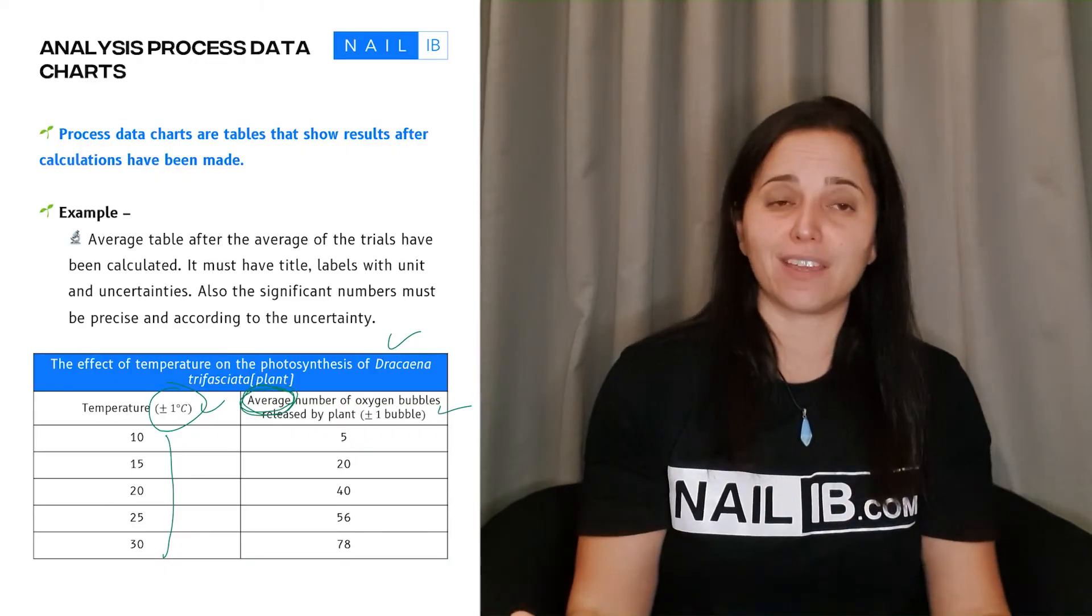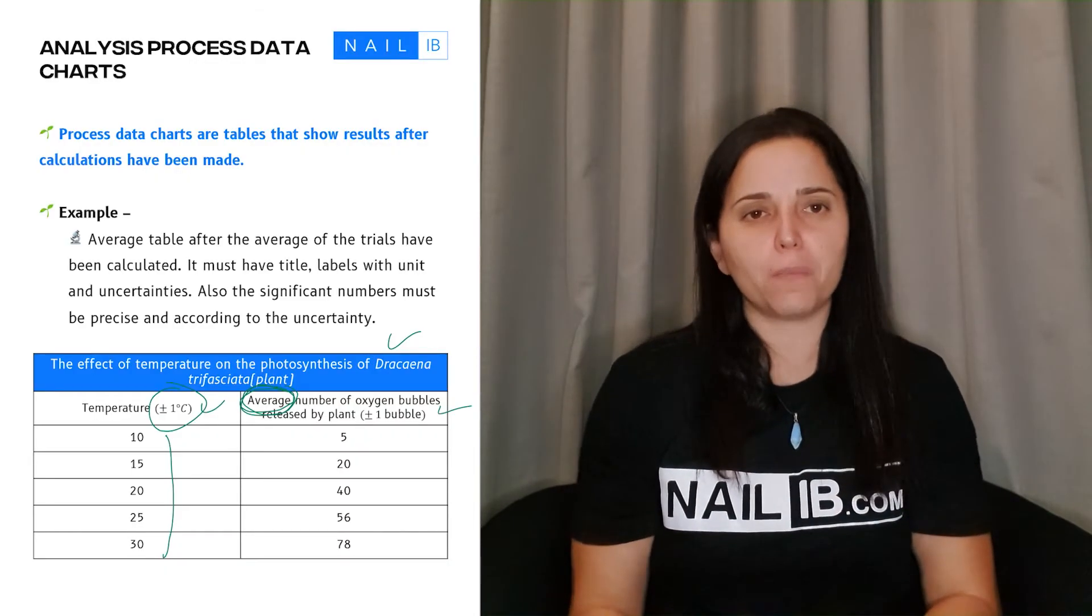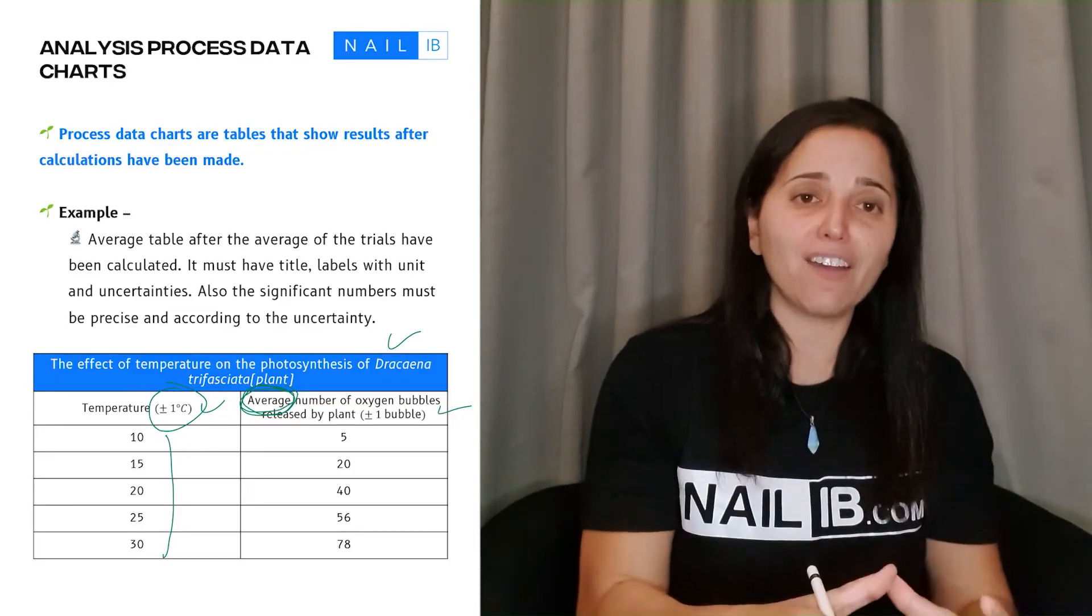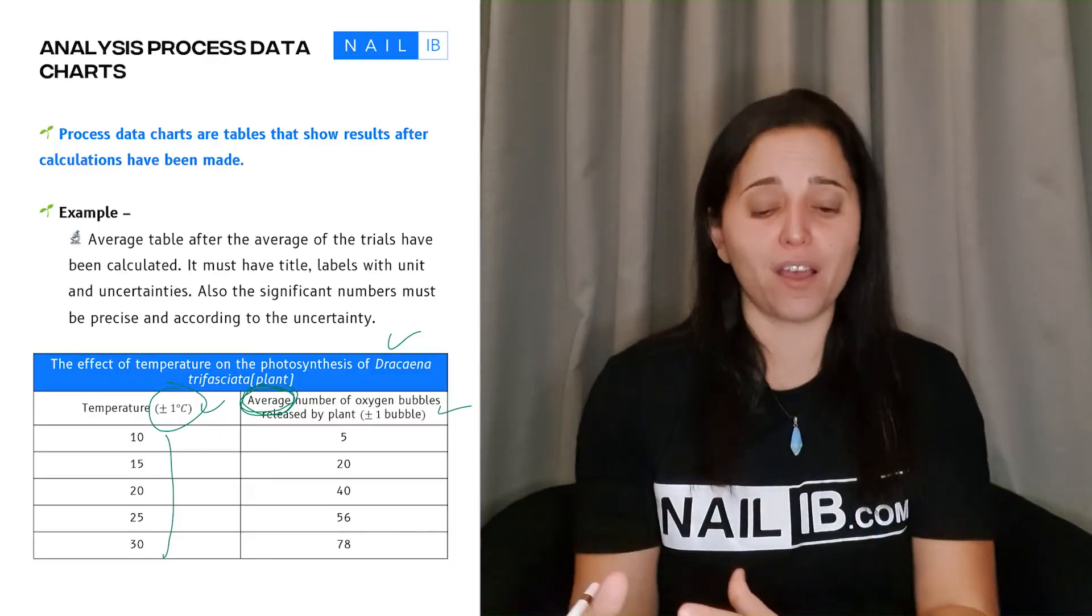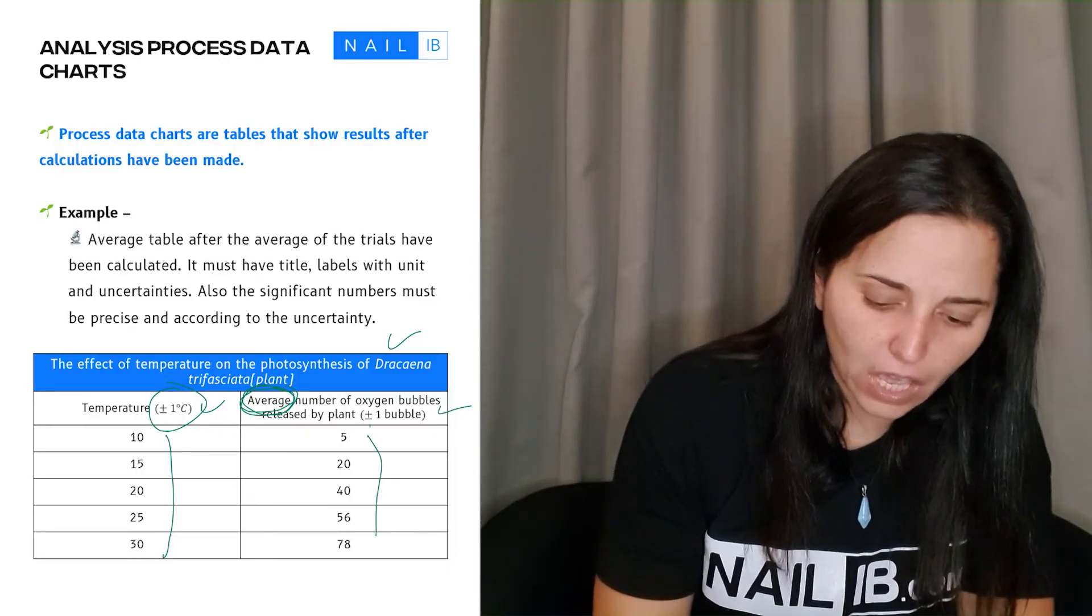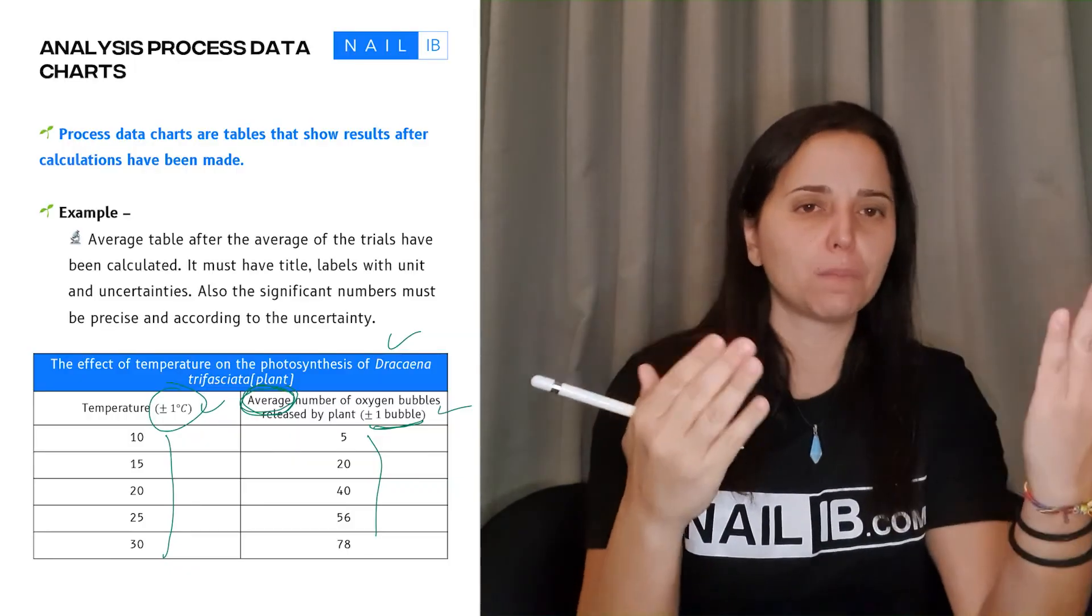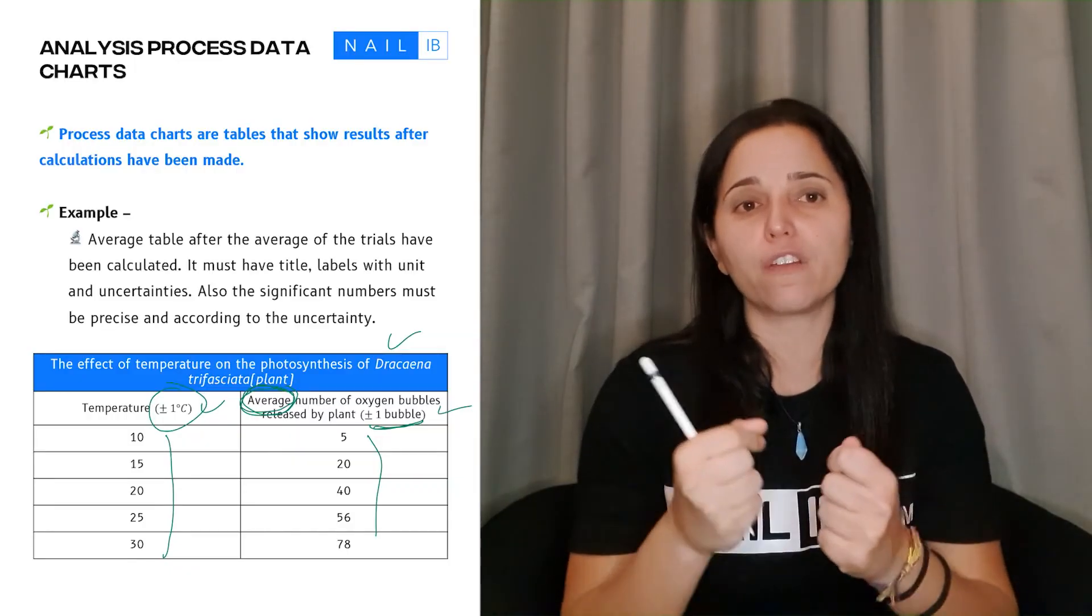And then look at the difference now. There is the word average that shows that it's process data. If you said number of oxygen bubbles, that probably would have been the raw data. But because it says the word average, now we know that this is processed. And you have the numbers and you have the unit right here again. Unit, uncertainty, titles, independent, dependent with numbers. All of this is important.